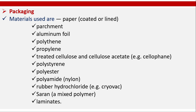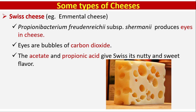Swiss cheese, e.g., Emmental cheese: Propionibacterium shermanii produces eyes in cheese — eyes are bubbles of carbon dioxide. The acetate and propionic acid give Swiss cheese its nutty and sweet flavor.